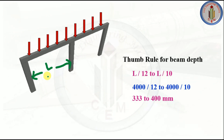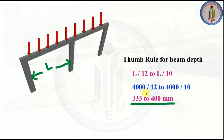For a clear span of 4000 mm, the depth works out to 333 to 400 mm. We can take 400 mm as the beam depth.